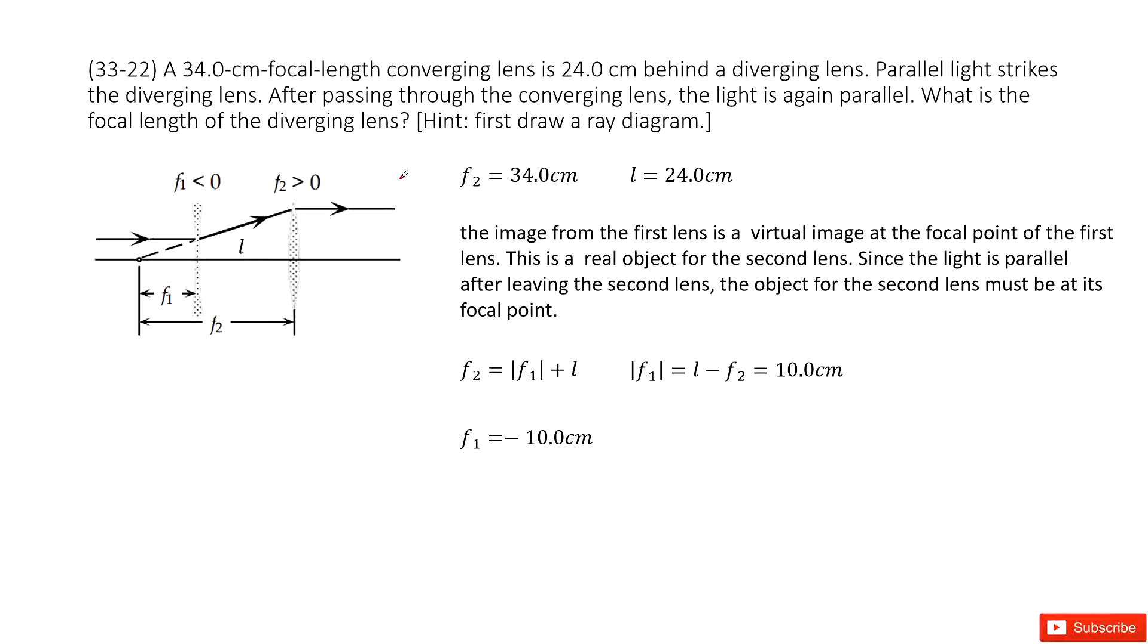So there we have this system with two lenses. This one is divergent. This one is convergent. As we know for divergent, the first lens F1 is negative. As for convergent, F2 is positive.